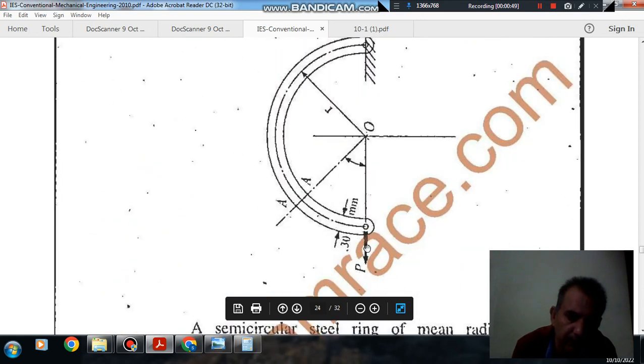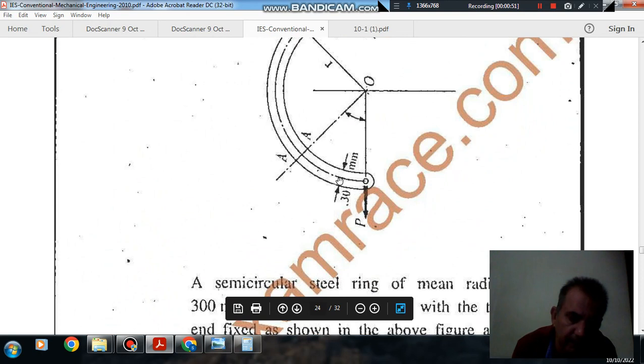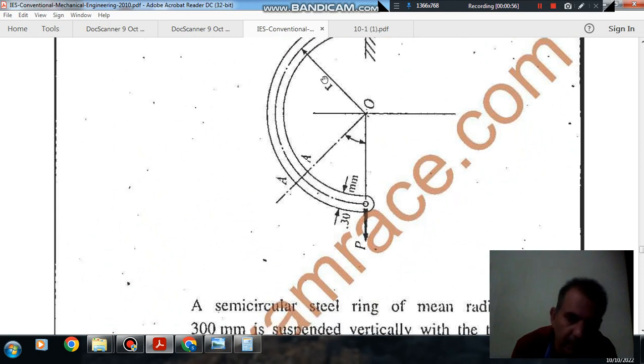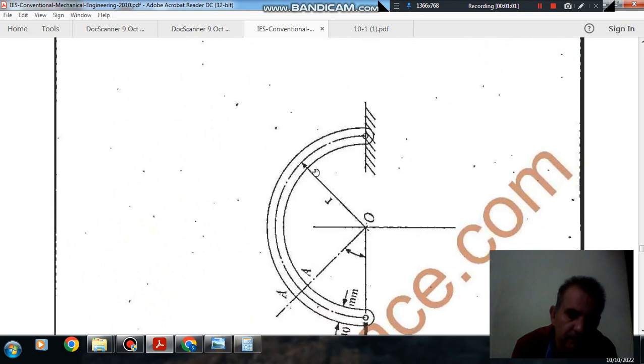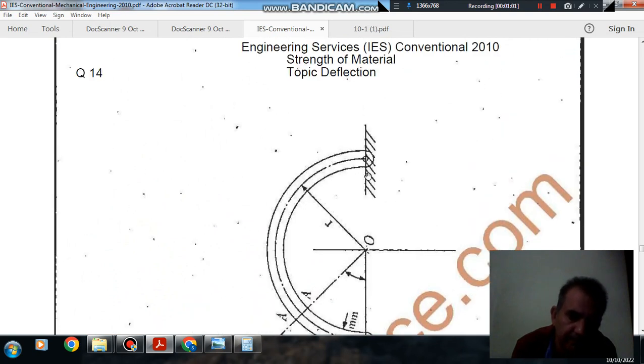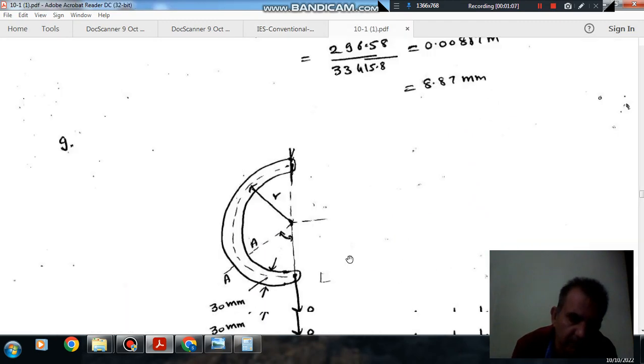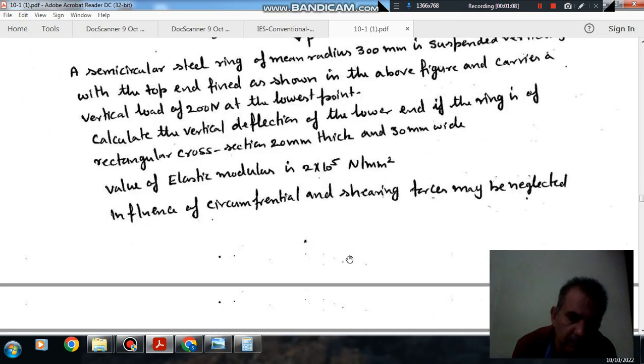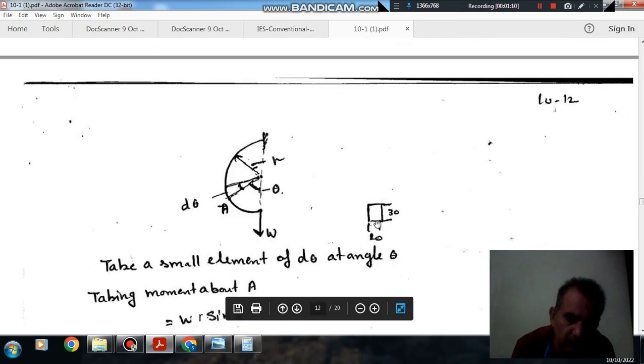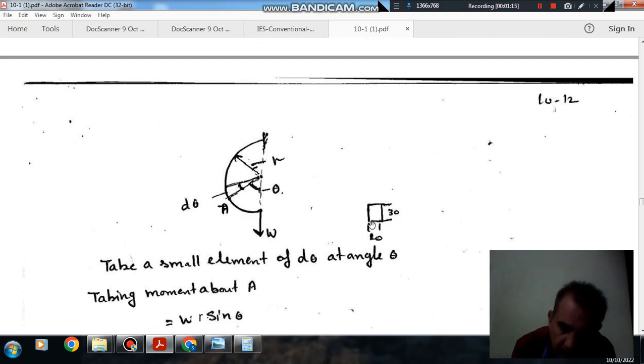This is your load P and this is 30 mm of depth and R is the radius, radius of the ring is given. Now it is fixed at this end. As thickness of the ring is given as 20 mm and depth is 30 mm, it has a rectangular cross-section with 20 mm thickness and depth 30 mm.